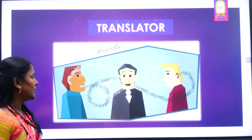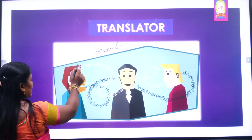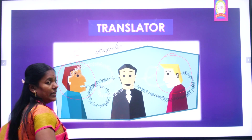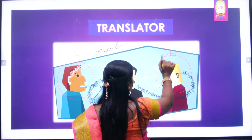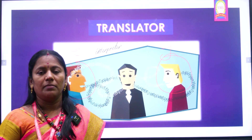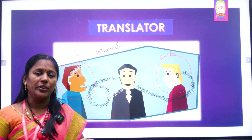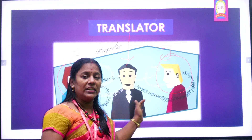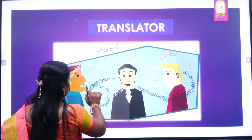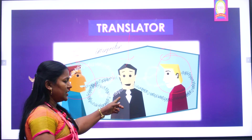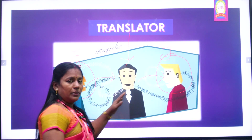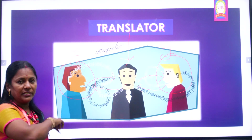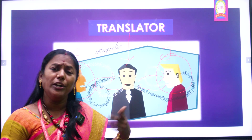Next comes a translator. Consider an example: person one knows only English and person two knows only Tamil. They both want to communicate but there is a language barrier. In the centre, we need a translator who knows both English and Tamil. Person one communicates in English; the translator converts it to Tamil and conveys it to person two. When a reply comes in Tamil, the translator converts it to English and passes the message. This is the work of a translator.